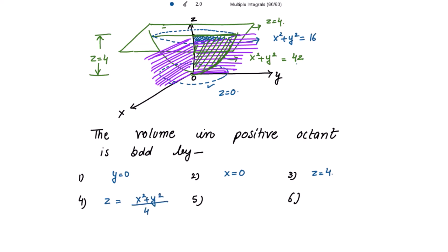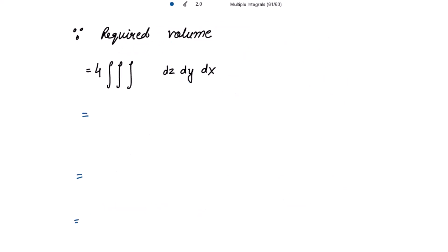Now it's your choice whether you want the limits of x to be constant or the limits of y to be constant. Let me take the limits of x to be constant. From the equation of the circle, on the x-axis where y = 0, x goes from 0 to 4. And y goes from 0 to √(16 − x²). Now I have the limits of z, y, and x, so the required volume is 4 times the volume in the positive octant.